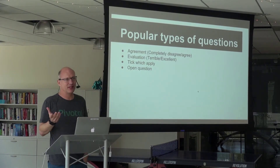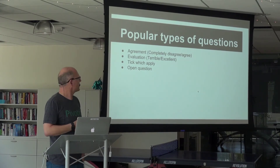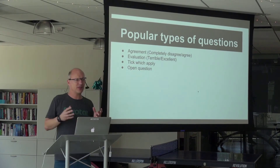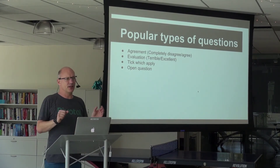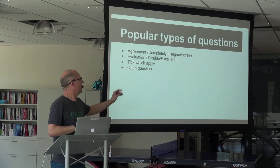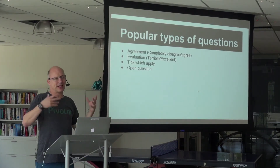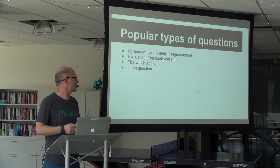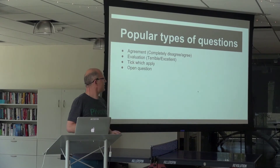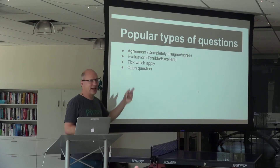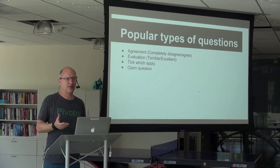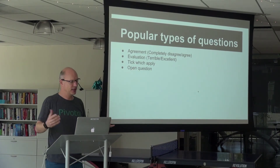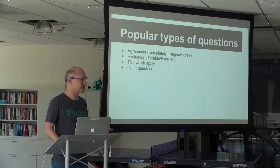What kinds of questions can you ask? You can do agreement questions — completely disagree to completely agree. You can do evaluation questions — terrible to excellent. You can really make any semantic differential — put any two words there. The drawback is people need to constantly re-read what the question is about. The advantage of agree/disagree is it's always clear, but it gets boring if you do it all the time. A 'tick all that apply' is always good. And open questions — more work, you have to read them, but they can give answers you didn't expect. If you're surveying 300 people, only have one or two open questions.